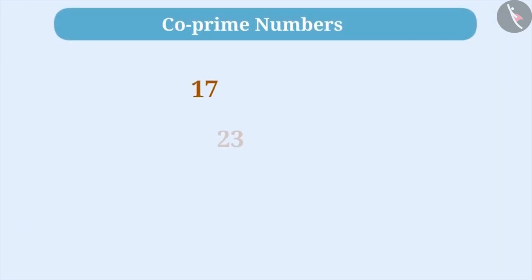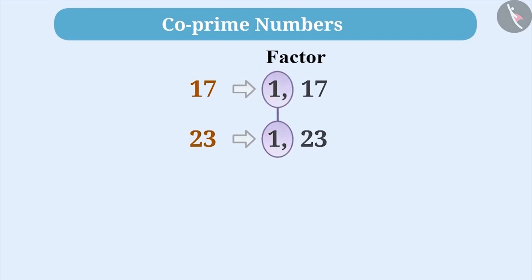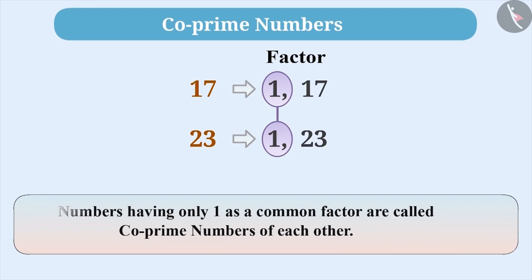The factors of the numbers 17 and 23 have only 1 as a common factor. Such numbers having only 1 as a common factor are called co-prime numbers.